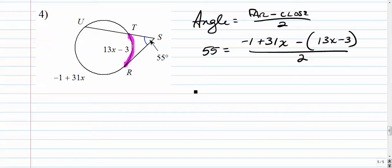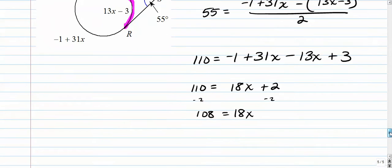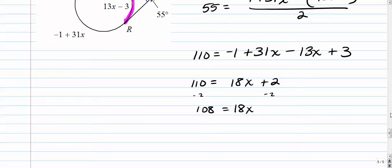Let's get this two out of here first. We'll multiply both sides by it: 55 times 2 is 110. Now the right-hand side needs a little bit of work. Let's distribute that negative in there. When you distribute a negative into a positive 13x, it becomes negative 13x, and a negative 3 becomes a positive 3. Now we want to combine like terms: 31x minus 13x is 18x, negative 1 plus 3 is 2. Subtract 2: 108 equals 18x, and that is going to equal 6.